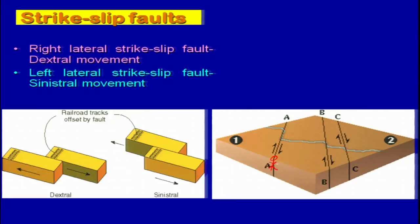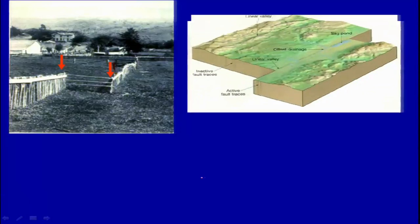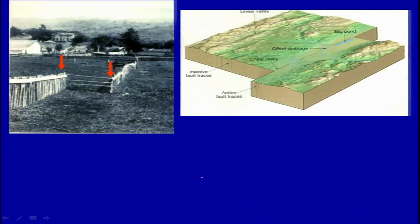Another example given to understand this is where two rail tracks have been displaced, showing sinistral — left lateral — movement. Where this block is moving towards your side: if you stand here and see, the left block is moving towards your side, so you can identify easily based on that. This was an example of a man-made structure displaced during the San Francisco earthquake, and another one shows the offset of streams or deflection of streams.